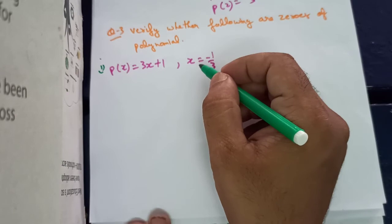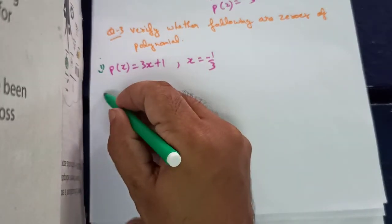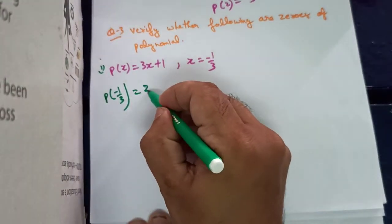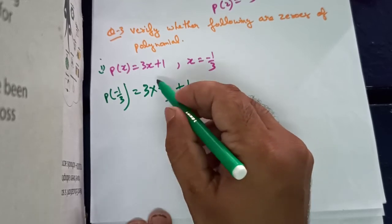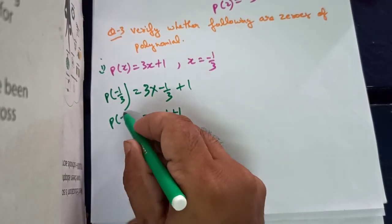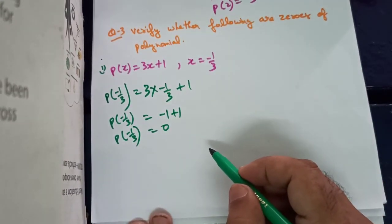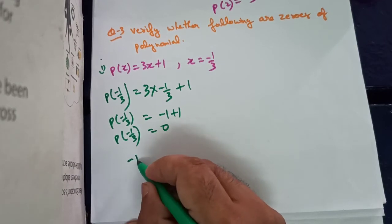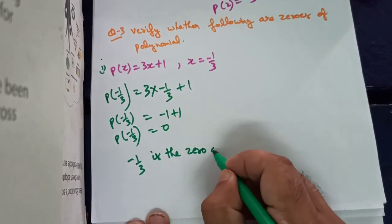So for finding p(minus 1 by 3), we substitute x as minus 1 by 3 into the polynomial: 3 times minus 1 by 3 plus 1. The 3 and 3 cancel out, giving us minus 1 plus 1, so p(minus 1 by 3) is equal to 0. Since the value is 0, we can say that minus 1 by 3 is the zero of the polynomial.